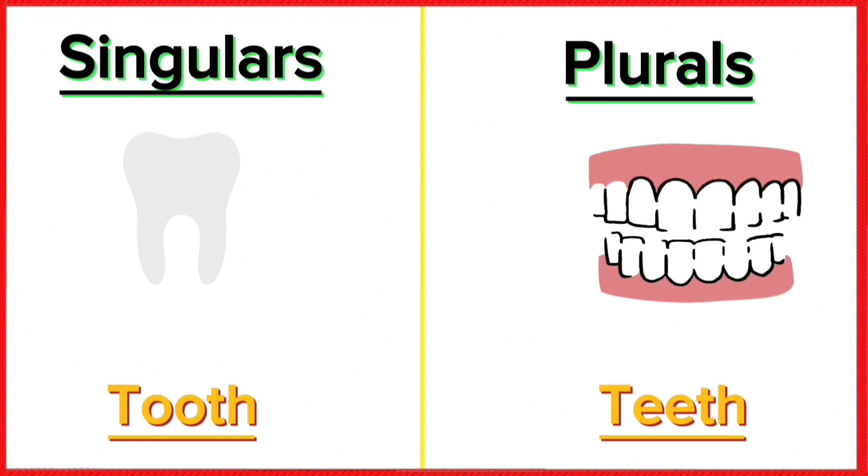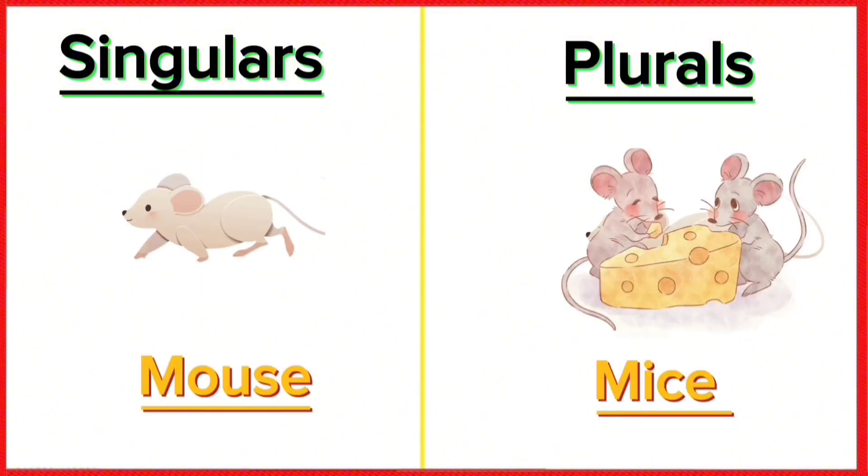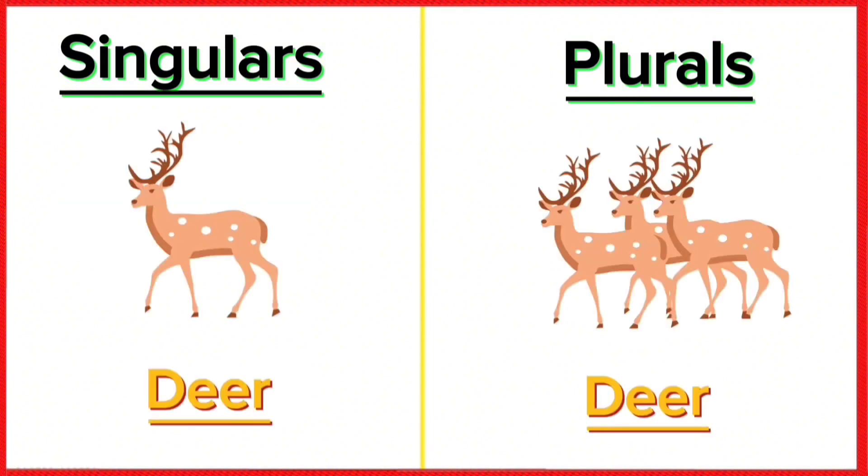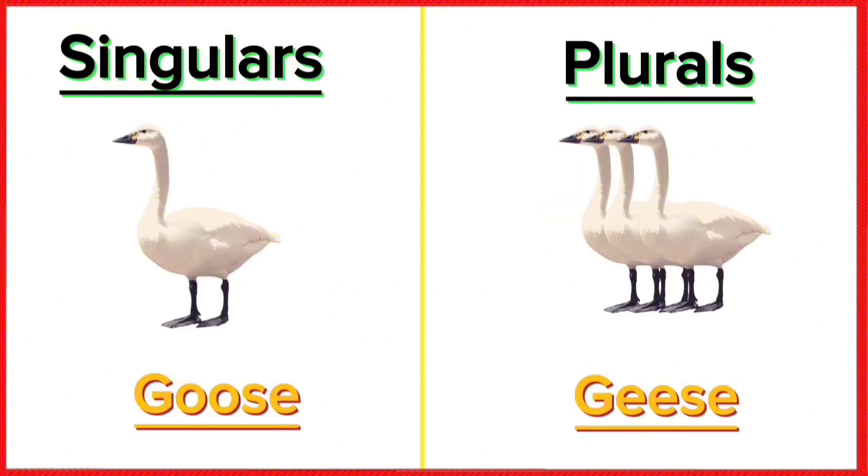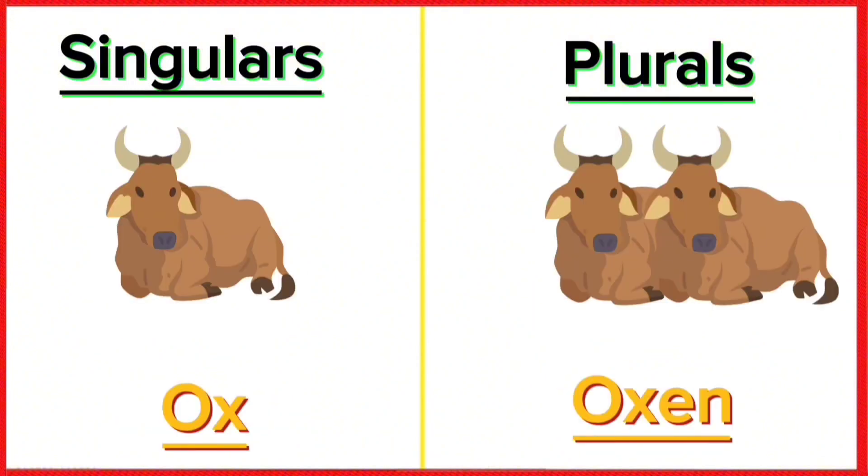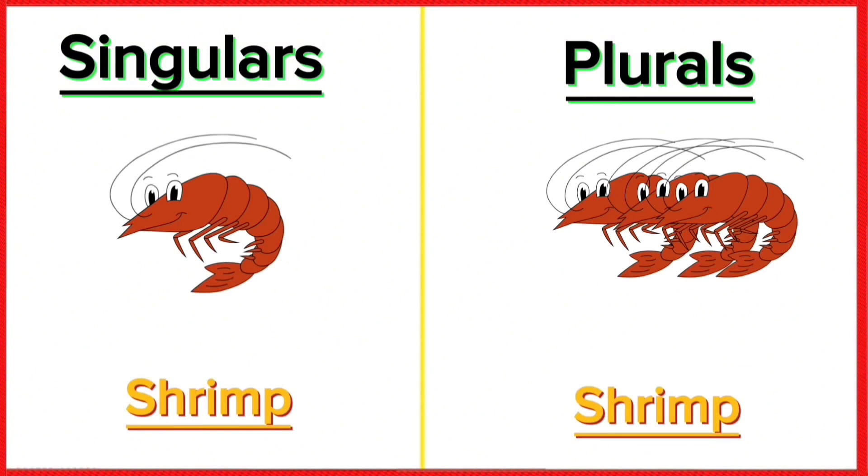Tooth-teeth, foot-feet, mouse-mice, fish-fish, deer-deer, goose-geese, moose-moose, ox-oxen, salmon-salmon, shrimp-shrimp.